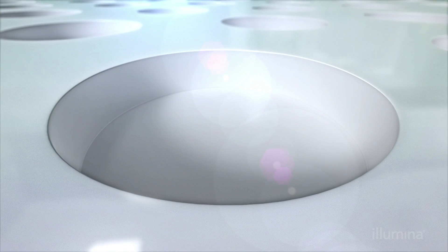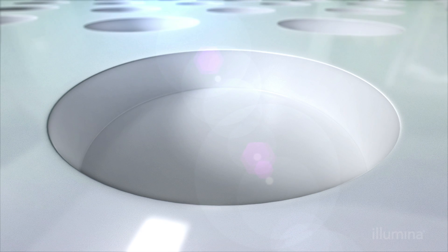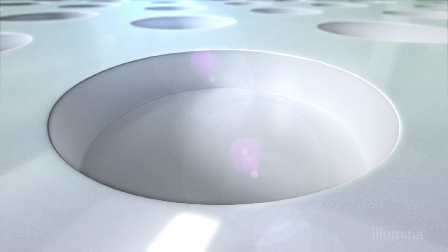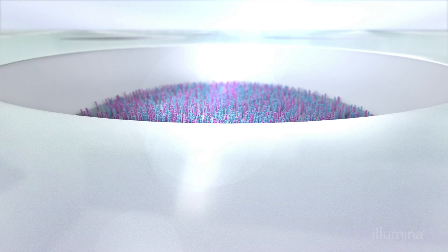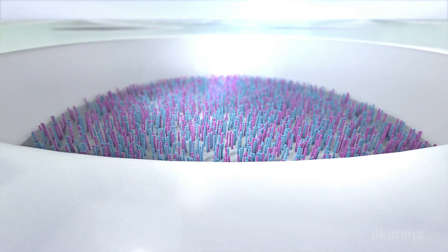The flow cell is created by patterning billions of nano well structures into the glass substrate. After flow cell assembly, the DNA primers are deposited exclusively into the nano wells.